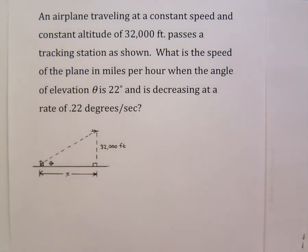What is the speed of the plane in miles per hour when the angle of elevation theta is 22 degrees and is decreasing at a rate of 0.22 degrees per second? Normally the first step would be to draw a diagram but in this case it's been provided for us.